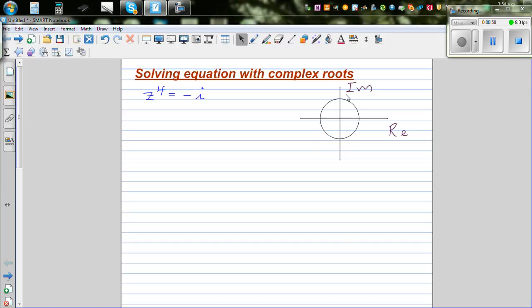So this is a unit circle. If this is 1, this would be negative 1 on the real arm. And if this is i, this point would be negative i. So here the question is, if z to the power 4 is negative i, which are the roots here?